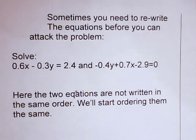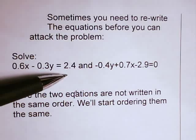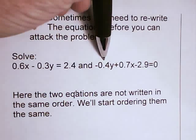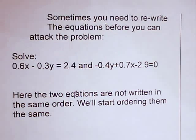Sometimes you need to rewrite the equations before you can attack the problem. Here you notice I've got 0.6x minus 0.3y equals 2.4, and I've got negative 0.4y plus 0.7x minus 2.9 equals 0. My x and y terms are in reverse order. The two equations are not written in the same order. We'll start by ordering them the same.